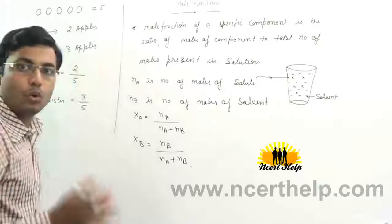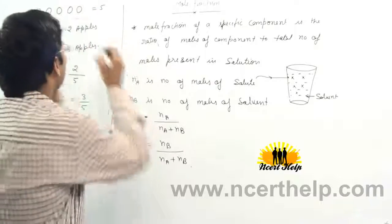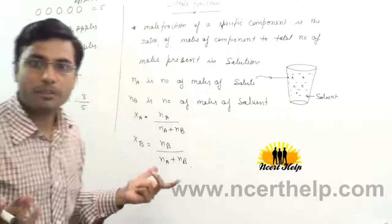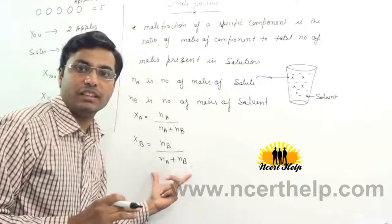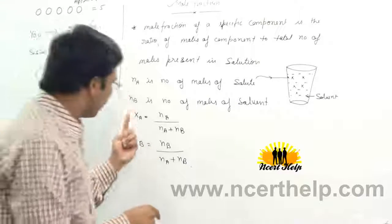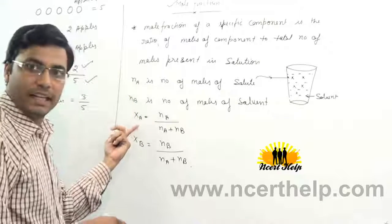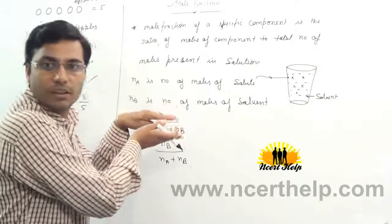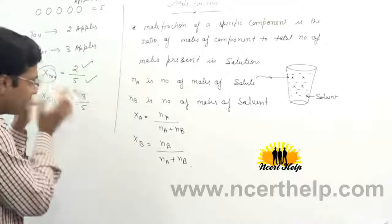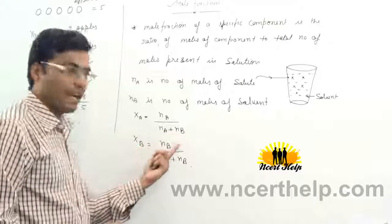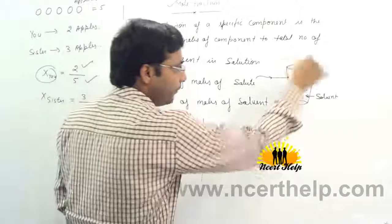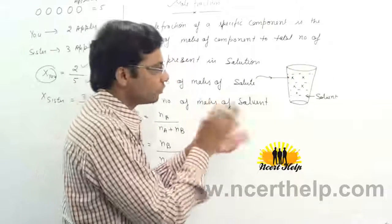Here you can see it is the same scenario as we discussed in the apple example. There, total apples was 5; here we are using moles, so total moles is Na plus Nb. The mole fraction of you was your apples divided by total apples; similarly, mole fraction of A is number of moles of A divided by total number of moles. The fraction of your sister was three by five; similarly, mole fraction of B is Nb divided by total number of moles.